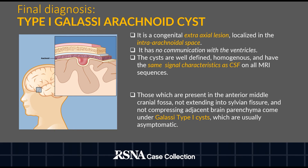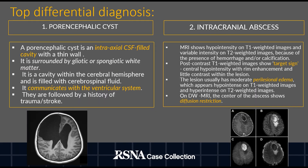What are the top differential diagnoses? The first one is porencephalic cyst. This is also a CSF-filled cavity but is intraxial in location. It is surrounded by gliotic and spongiotic white matter, communicates with the intraventricular system, and is usually associated with a history of trauma or stroke.